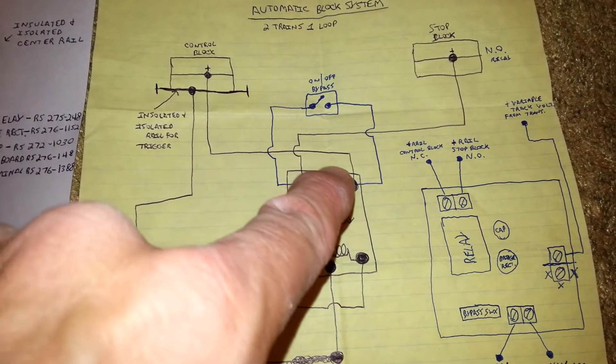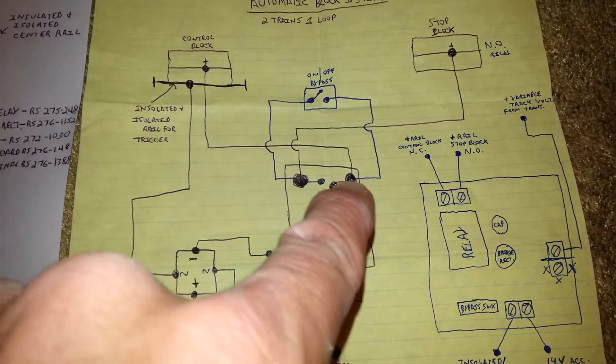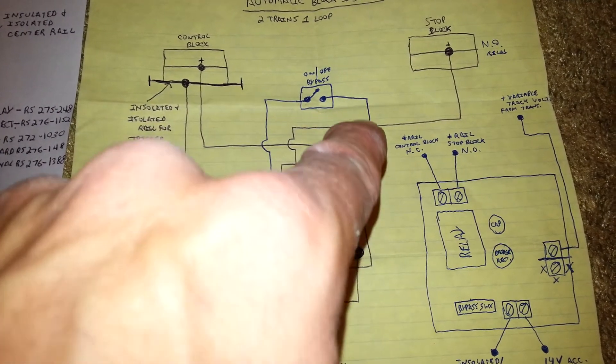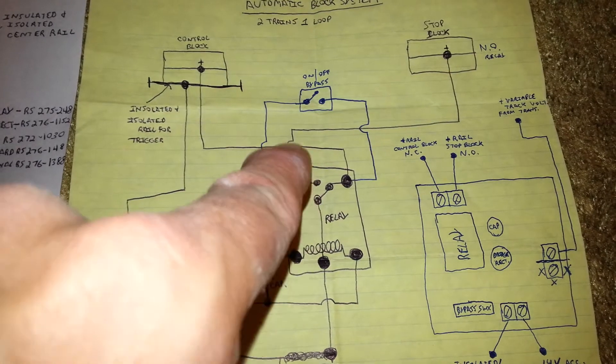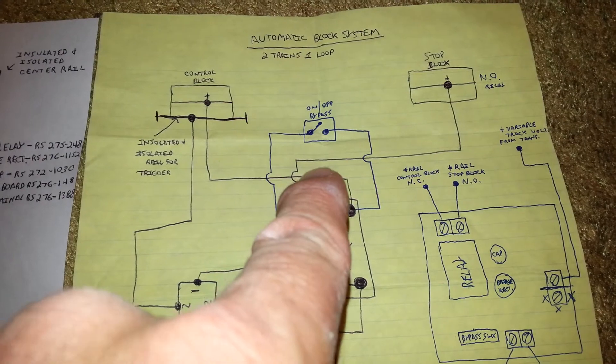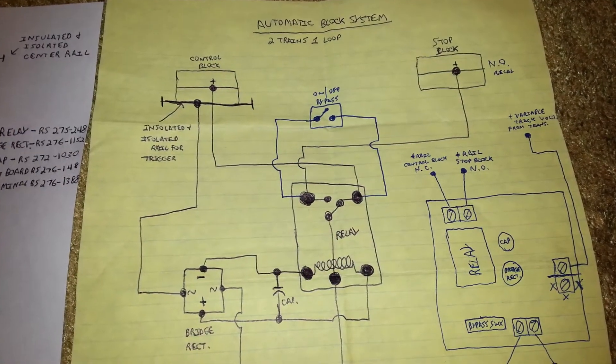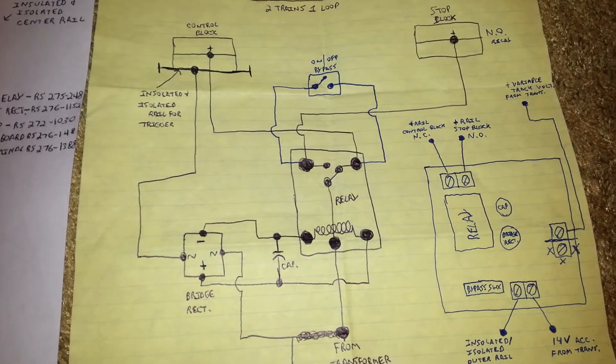This is so that you can energize this side of the relay, or this side of the relay is energized, and then with the flip of this closing of this switch, you also energize the other side, which in turn will energize your stop block continuously. Therefore, you can just flip the switch and run one train instead of having a train stop.